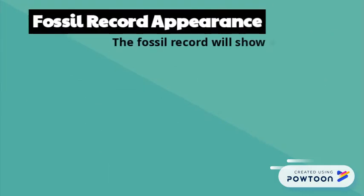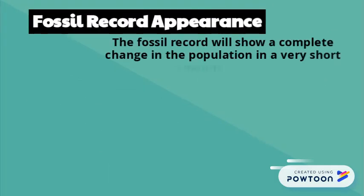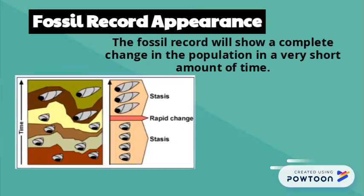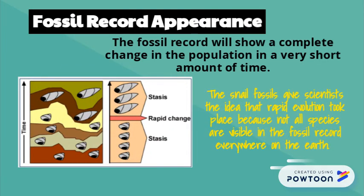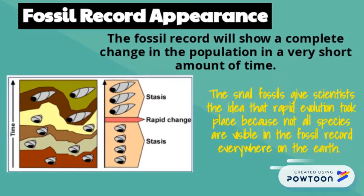Punctuated equilibrium is the explanation for why we see such changes in the fossil record when dealing with fossils. In reality, they change slowly over time, but we only see what was saved as a fossil in the record.